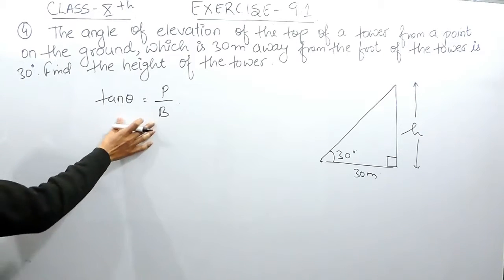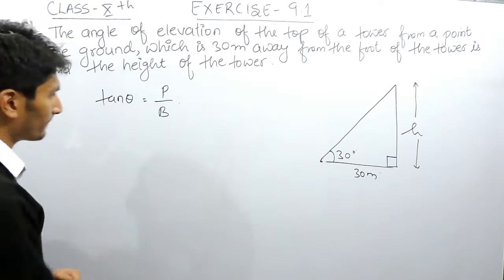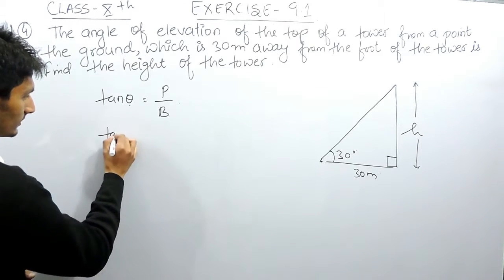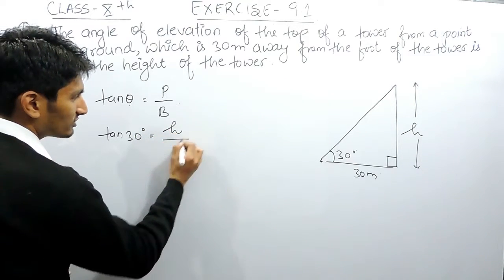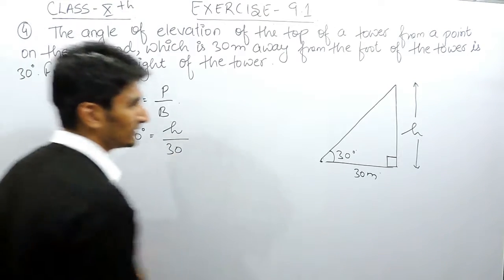You must have studied these ratios in the chapter on trigonometric ratios. You must remember these ratios to solve questions based on height and distance. Now tan theta, where theta is 30 degrees, perpendicular is what you have to find, which we suppose as h meters, and base is 30 meters.